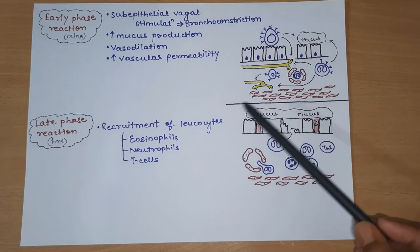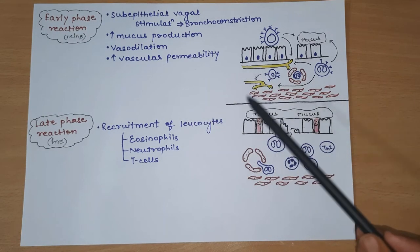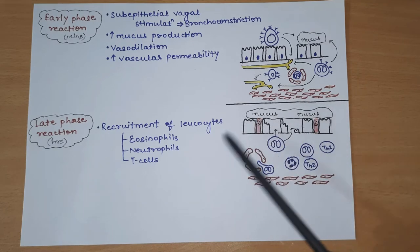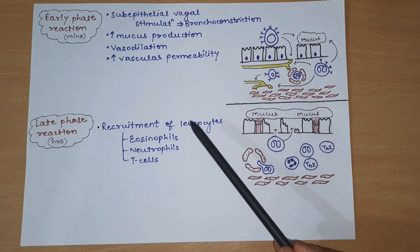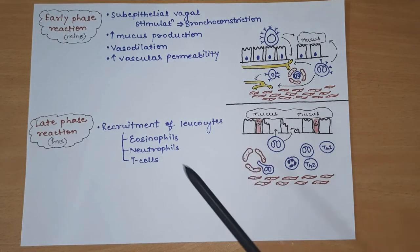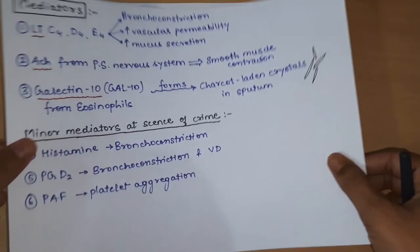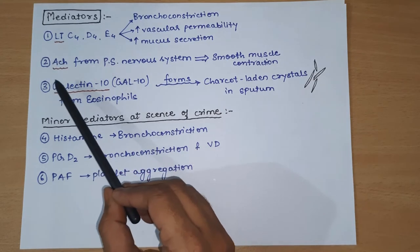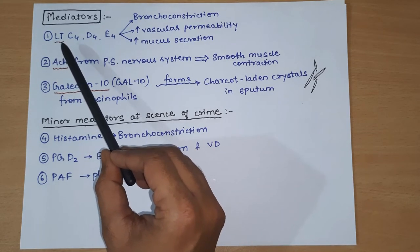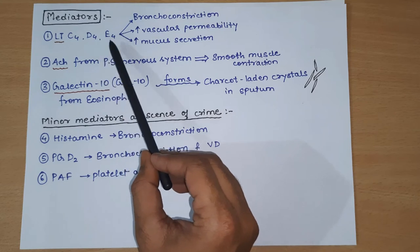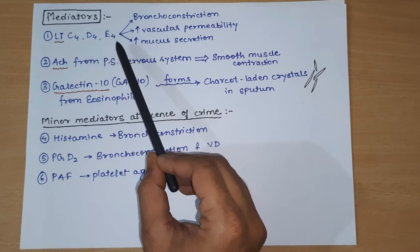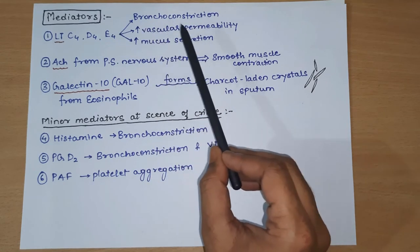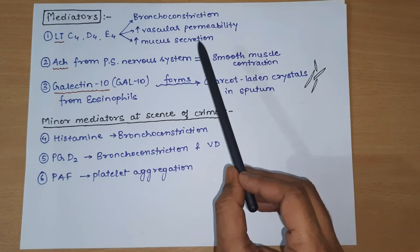Now let us see how these cells perform their function through mediators. The three most common mediators in bronchial asthma are: first, leukotrienes - specifically leukotrienes C4, D4, and E4 - which are very important mediators that play a role in bronchoconstriction, increasing vascular permeability, and increasing mucous secretion. Second is acetylcholine, released through the parasympathetic nervous system via the vagal nerve, which helps in smooth muscle contraction.